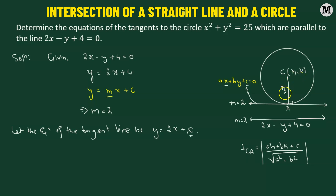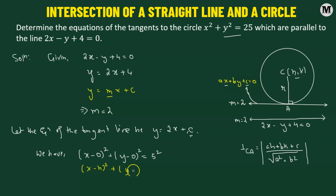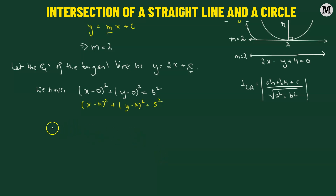We'll need the radius r, which we can find from the given circle, and also the center. The equation of the circle is x squared plus y squared equals 25, which can be rewritten as (x minus 0) squared plus (y minus 0) squared equals 5 squared. The standard form of a circle is (x minus h) squared plus (y minus k) squared equals r squared. So the center is (0, 0) and the radius is 5 units.